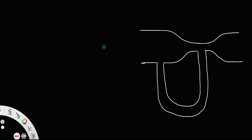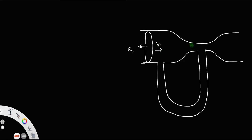A Venturi meter is a device used to measure the rate of flow of liquid through a pipe. It is itself a pipe consisting of two different cross sections. There is a larger cross section with area A1 and velocity V1, and a neck-like structure with a smaller cross section area A2 and velocity V2.